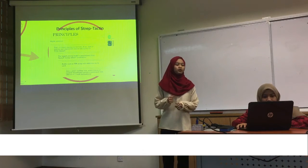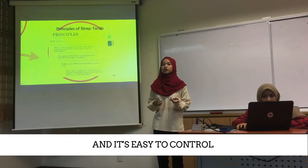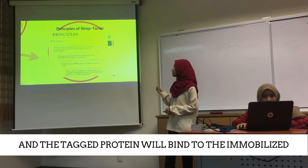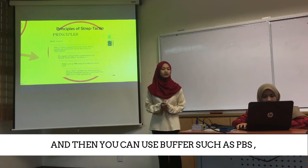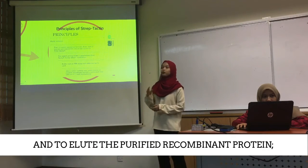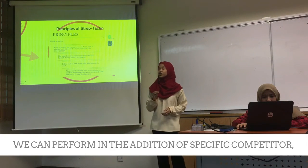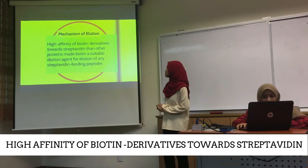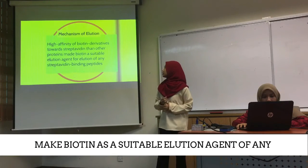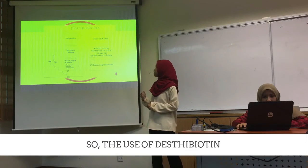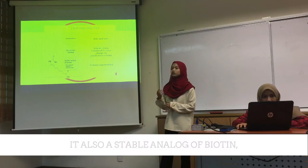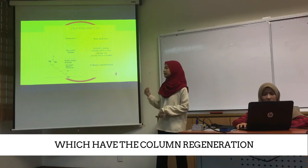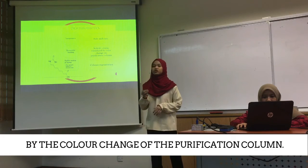I am going to explain about the principle of strep tactin purification. The first aspect is that it is highly selective and easy to control the interaction between the strep tactin resin and the engineered strep protein. The strep protein will bind to the immobilized strep tactin during affinity purification. We can use buffers such as PBS to wash, and to elute the purified protein we use a specific competitor which is 2.5 mM desthiobiotin. The mechanism of elution uses the high affinity of biotin derivatives to strep tactin. Desthiobiotin is used because it is inexpensive, has reliable binding, and is a stable analog of biotin — the natural ligand of strep tactin. This system is safe and easy, with quality regeneration, and activity can be visualized by color change.